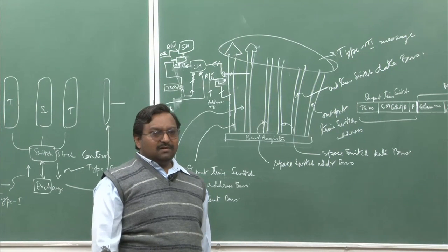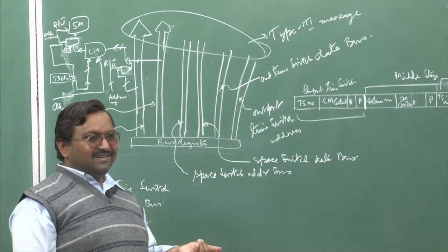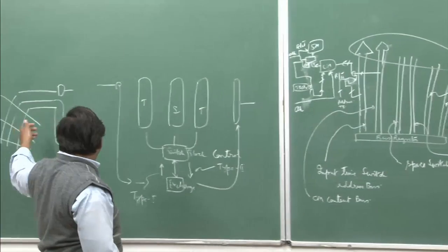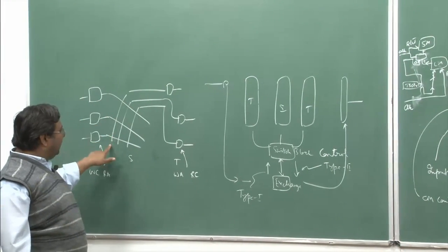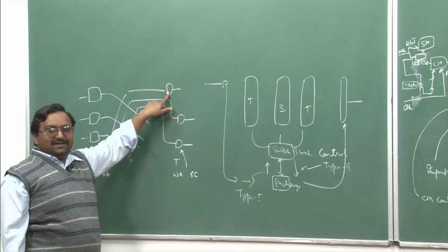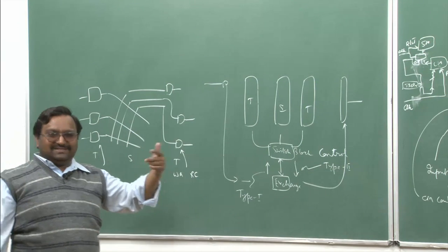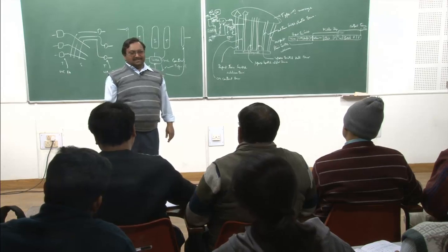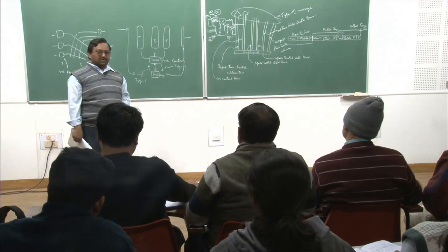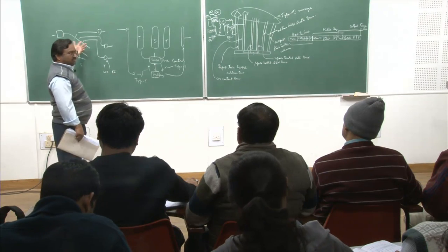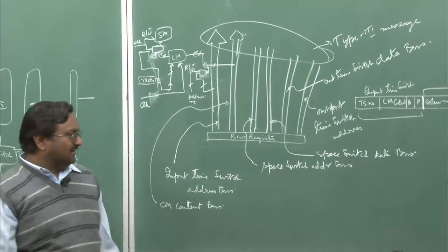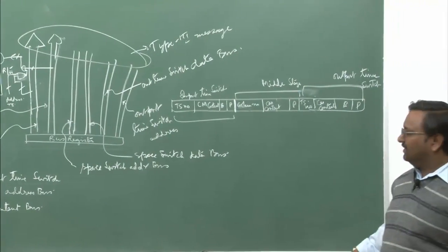This whole thing together is what is known as type 3 message. This is the output time switch — output type control memory. Now, if going in parallel, there will be no delay, but you can only write in one control memory at a time. For setting up a circuit, you need not write in all three control memories; you write in one here, one here, and one here — all can be done in one single time slot.